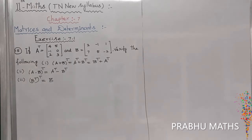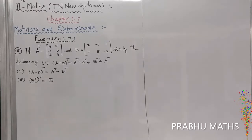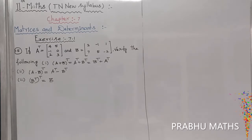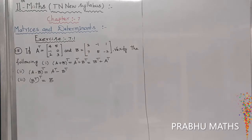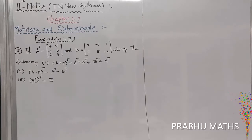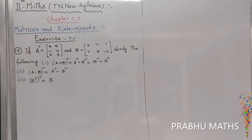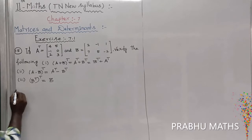Given A transpose equal to 4 5, minus 1 0, 2 3, and B equal to 2 2 minus 1, 1 7 5 minus 2. Verify the following conditions: first subdivision A plus B the whole transpose equal to A transpose plus B transpose, equal to B transpose plus A transpose. Second subdivision: A minus B the whole transpose equal to A transpose minus B transpose. Third condition: B transpose the whole transpose equal to B.